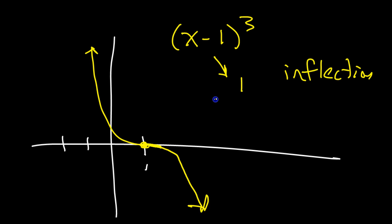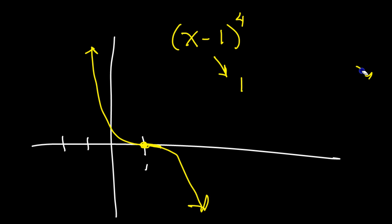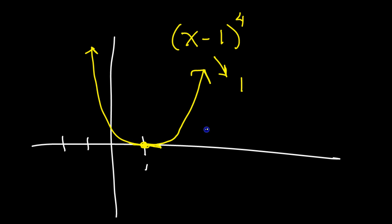That's what happens at a triple root. If there's a fourth root — a quadruple root — it's still sort of like a bounce, but a little flatter. It still goes back out the way it came. You're not really going to be able to tell easily between a quadruple and a double, so just do your best.